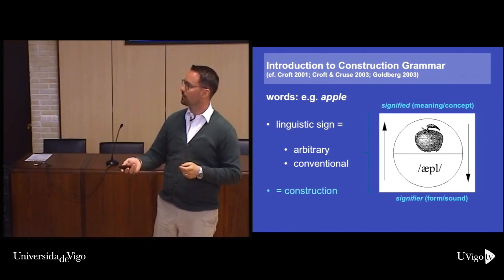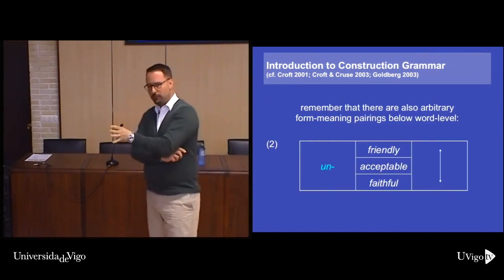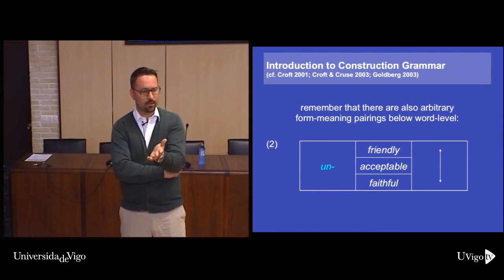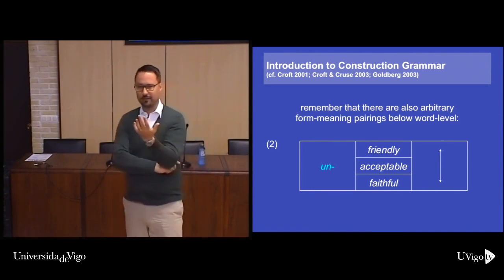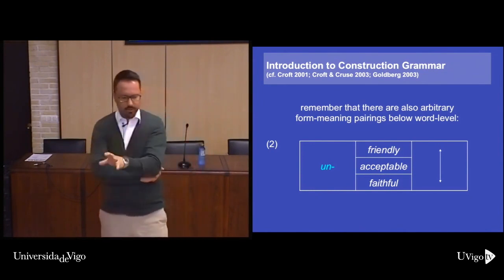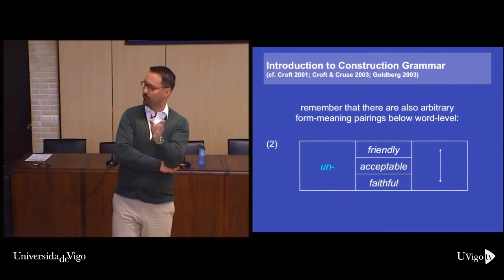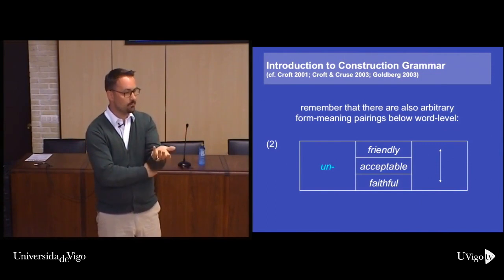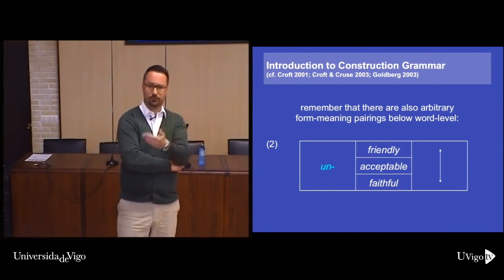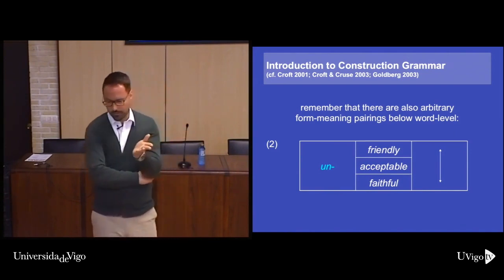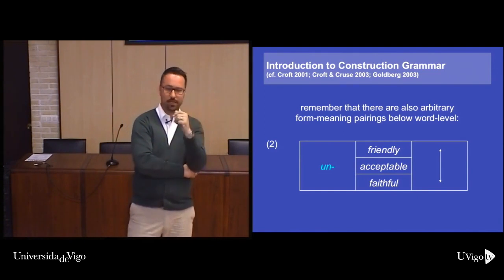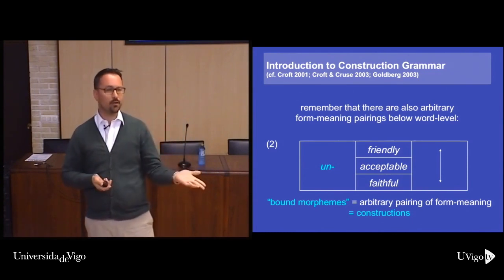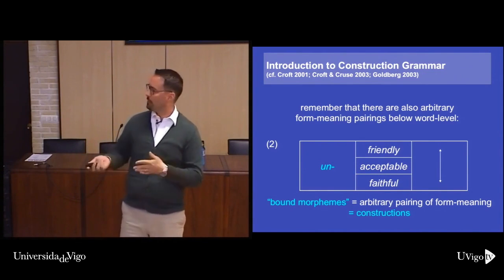We already know form-meaning pairings below the word level from classical structuralist linguistics: morphemes. If we've got a paradigm like 'untrue', 'unfriendly', 'unfaithful', 'unacceptable', in each of these we can identify subparts which carry form and meaning. The meaning of 'unfriendly', 'untrue' and so on is obviously always 'not friendly'. Classical morphological theory says UN- is a prefix with the meaning 'not'. Construction grammar hijacks this and says morphemes are form-meaning pairings, so they're also constructions — arbitrary and conventional.